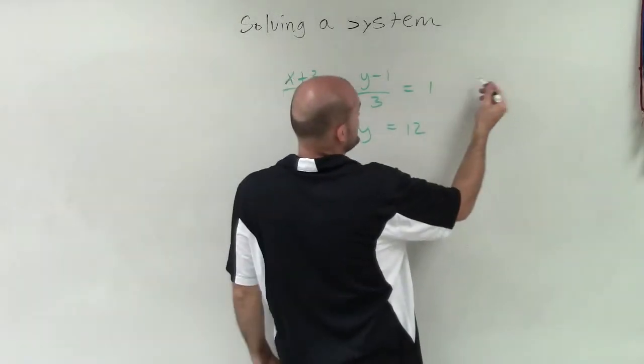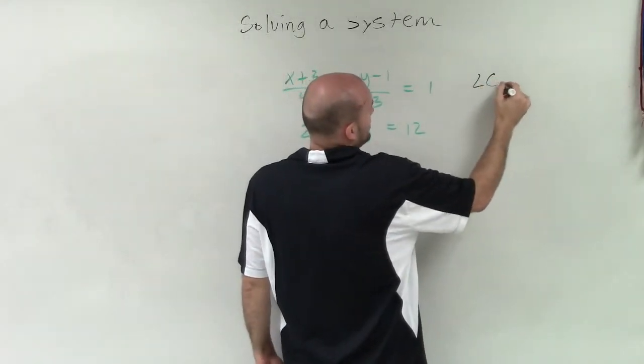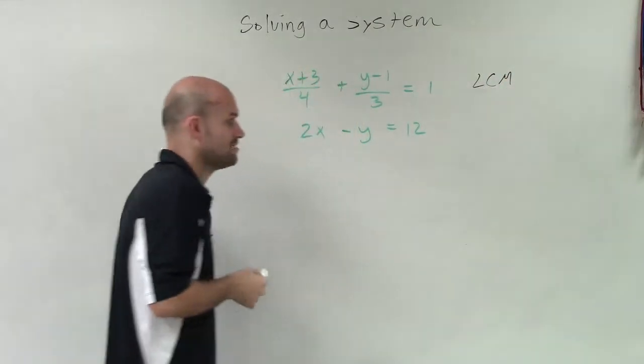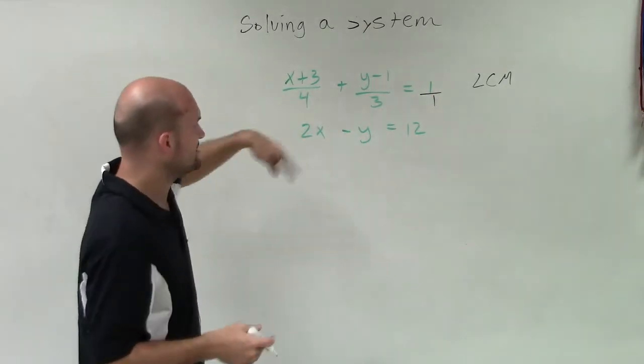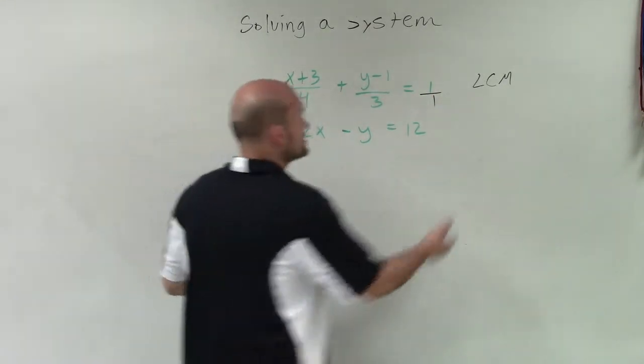I need to multiply by the least common denominator, or least common multiple of each one of my denominators. The least common multiple between 4 and 3—and you could say this is a fraction as well of 1—but the least common multiple between 4, 3, and 1 is going to equal 12.